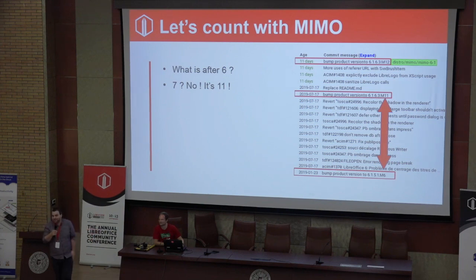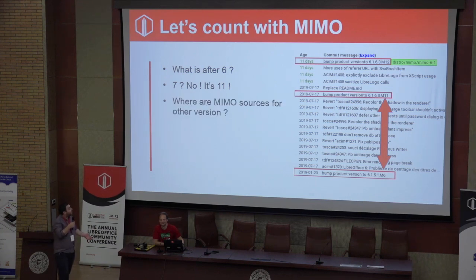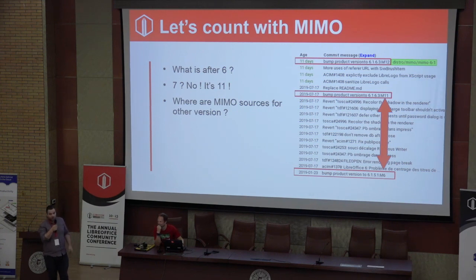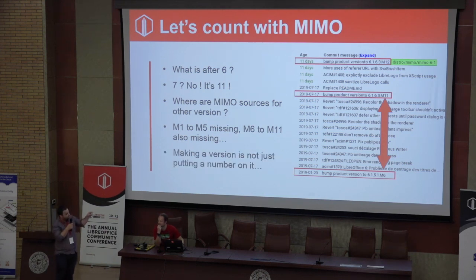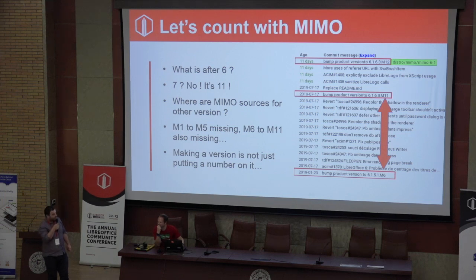Why? Why not? We don't know if there are some versions in between — in fact we know, but we don't know where the sources are, of course. So M1 to M5 missing, and M6 to M10 missing — in fact it was M6 to M10, sorry. Just for your information, making a version is not just putting a number on it.